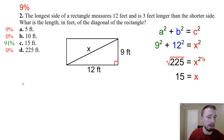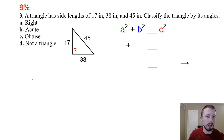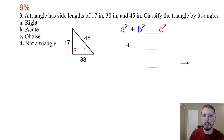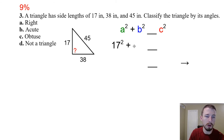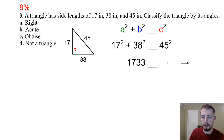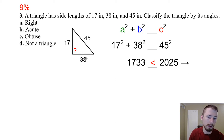Number three — a triangle has side lengths of 17, 38, and 45. To classify the triangle, first check validity: 17 + 38 = 55, which is greater than 45, so it is a valid triangle. Now, if a² + b² = c² it's a right triangle; if a² + b² > c² it's acute; if a² + b² < c² it's obtuse. Plugging in: 17² + 38² = 289 + 1444 = 1733, and 45² = 2025. Since 1733 < 2025, this is an obtuse triangle. Answer: C.